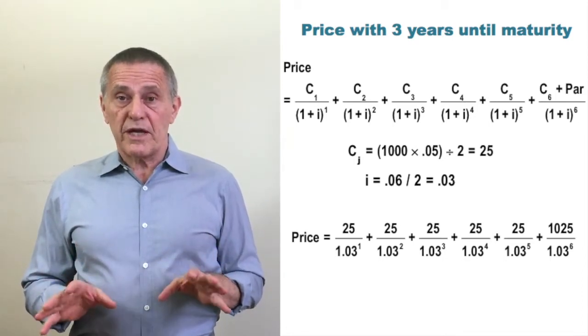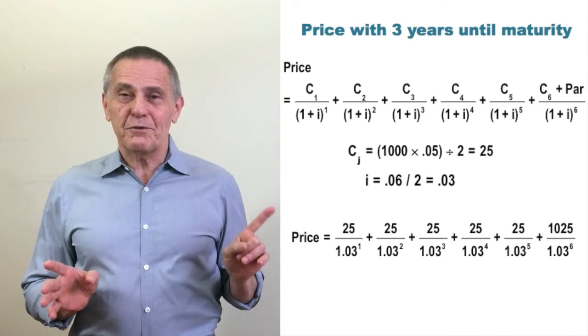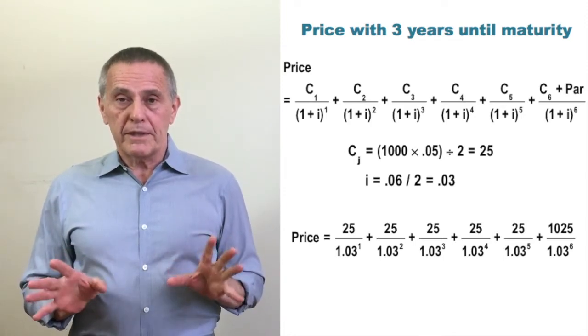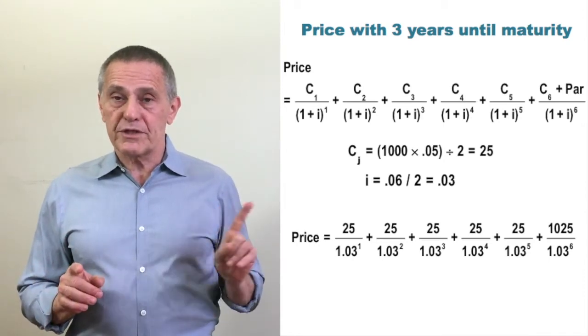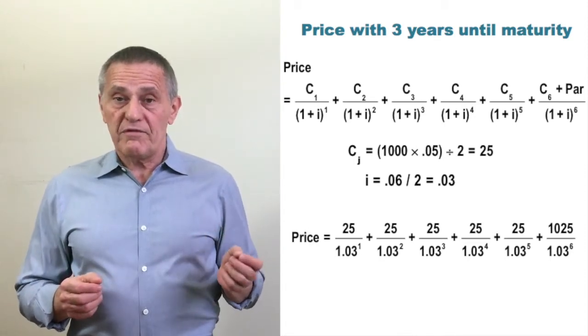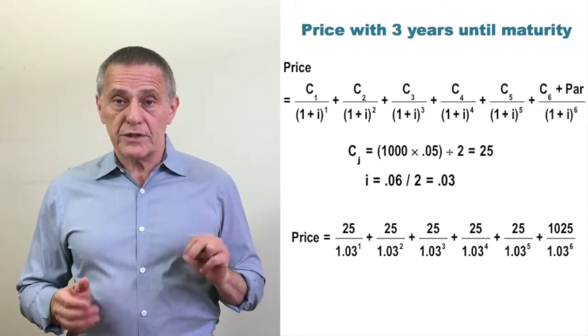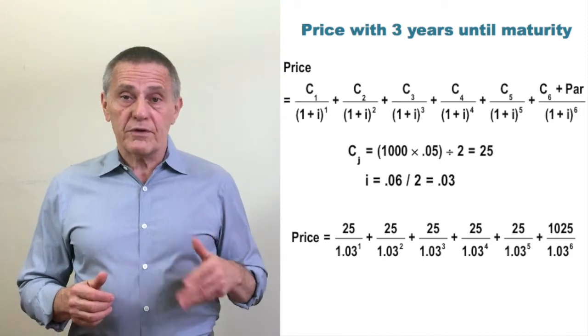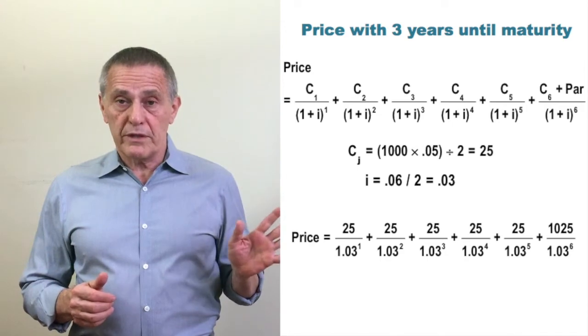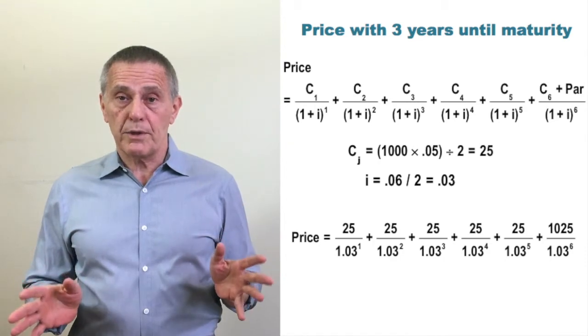Each of the 1.03 divisors are raised to a power that reflects the time until the receipt of the cash flow being discounted. Now since this first example assumes it's a bond that will have exactly 3 years to maturity from the settlement date, that means the first $25 coupon payment is divided by 1.03 to the 1 because that semi-annual coupon is due in exactly 1 coupon period 6 months in the future. The second $25 coupon is divided by 1.03 to the second power because the second due coupon is due in exactly 2 coupon periods. And so forth all the way out until the final cash flow, the $1,025 due in 3 years, and that's divided by 1.03 to the sixth because naturally in 3 years there are 6 semi-annual periods.